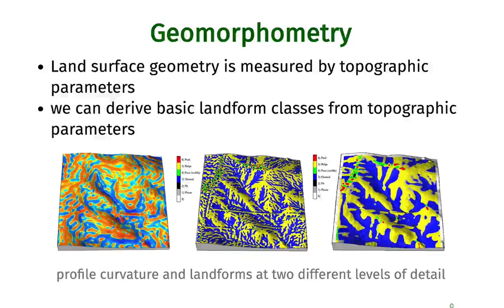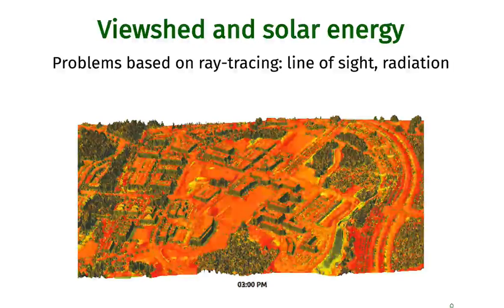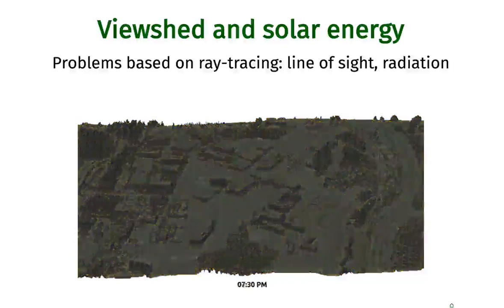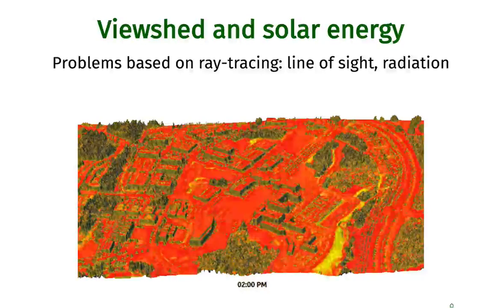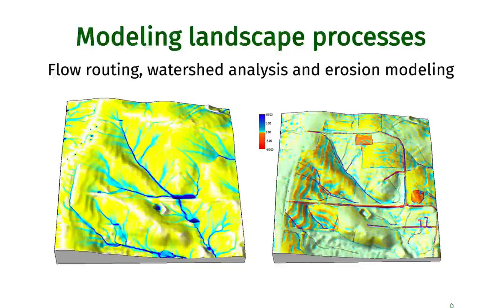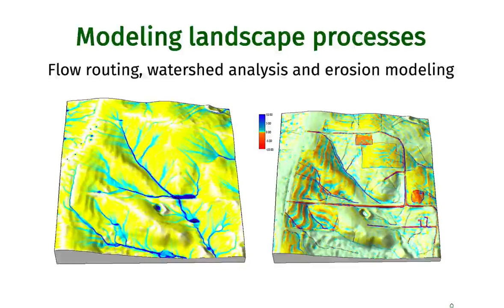We will also talk about geomorphometry — once we have a digital elevation model, how we can extract additional information describing the shape of topography and landforms. We will also do more complex topographic analysis, including line-of-sight or viewshed computation, computing the dynamics of solar radiation, and looking into the concepts of modeling landscape processes using flow routing, hydrologic modeling, and erosion and deposition modeling as examples.